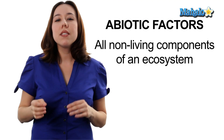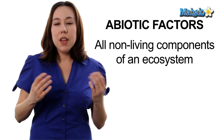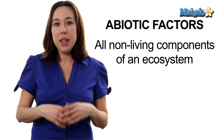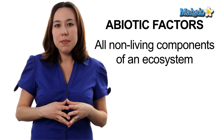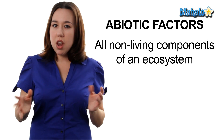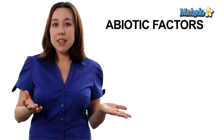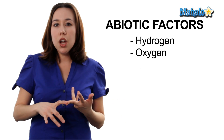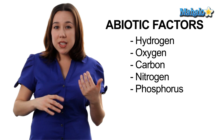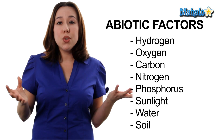Now abiotic factors are non-living components. They're going to be things that help to allow life to happen in this ecosystem, but they themselves are not living. These are things like hydrogen, oxygen, carbon, nitrogen, phosphorus, sunlight, water, and soil, just to name a few. It's important to note that the living organisms, or the biotic factors of the ecosystem, absolutely depend on all of the abiotic factors to exist.